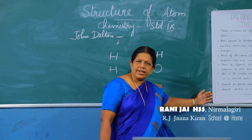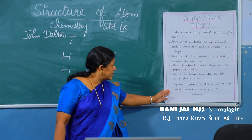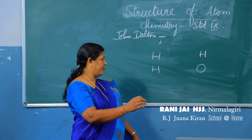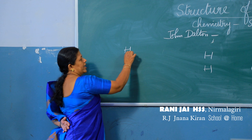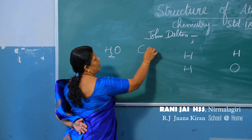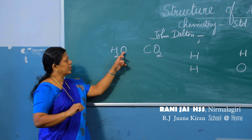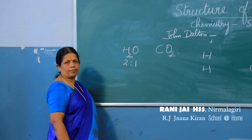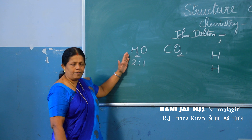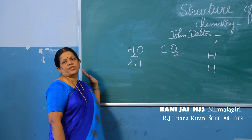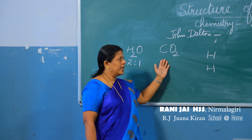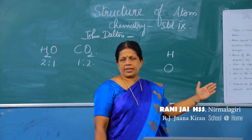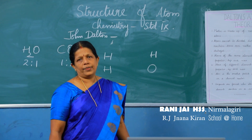The last postulate: compounds are formed when atoms of two or more elements combine in a fixed ratio. For example, water is H₂O and carbon dioxide is CO₂. In water, hydrogen and oxygen combine in the ratio 2:1. In carbon dioxide, the atoms combine in the ratio 1:2. These are the postulates of Dalton's atomic theory.